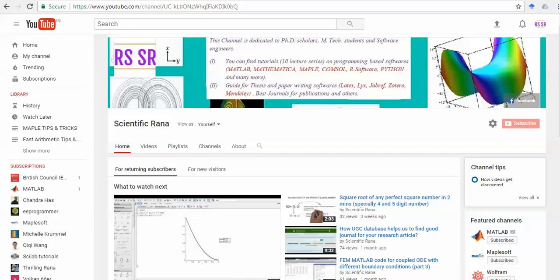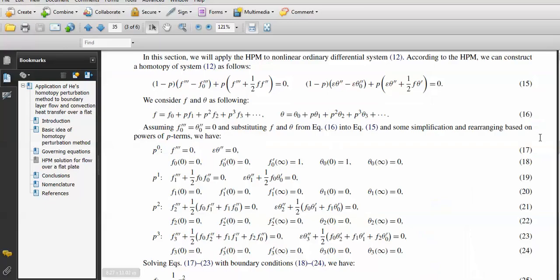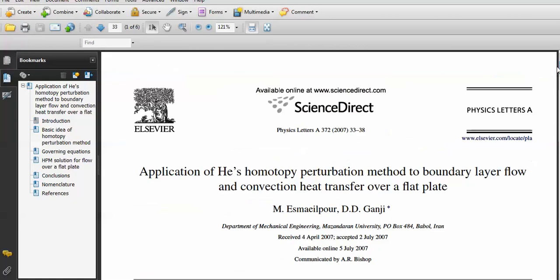So I have randomly found a paper which is published in Physics Letters A. The paper by Gaji, and you can see that he has used the He's homotopy perturbation method to solve a differential equation which arises in heat transfer over a flat plate.